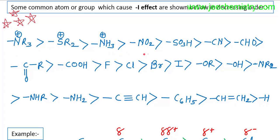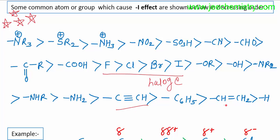The decreasing order of negative inductive effect groups includes: NR3+, SR2, NR2+, NO2, SO3H, CN, CHO, ketone, carboxylic acid, F, Cl, Br, I, OR, NR2, C≡C, C=C, C6H5, and finally hydrogen. Hydrogen is at the end, meaning all the groups listed have greater electron-withdrawing ability than hydrogen.